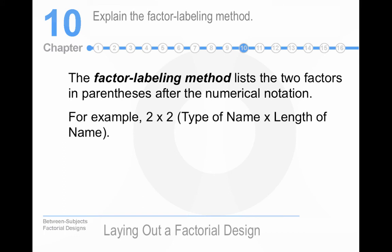The factor labeling method puts them in parentheses. So that's a two by two, type of name, length of name. For our example, it's a two by three by three, gender by age by type of news.